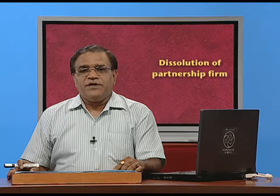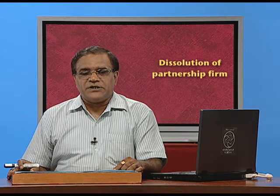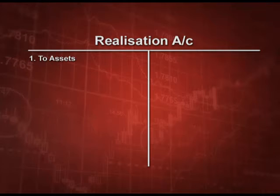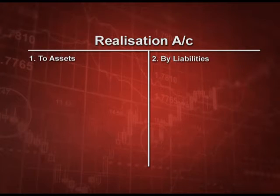First point: when we transfer assets to the realization account, the entry is realization account debit to asset, so it comes on the debit side. Then when we transfer liabilities, it will come on the credit side. The entry will be liabilities account debit to realization account, because assets are debit so they come on the debit side, and liabilities are credit so they come on the credit side.